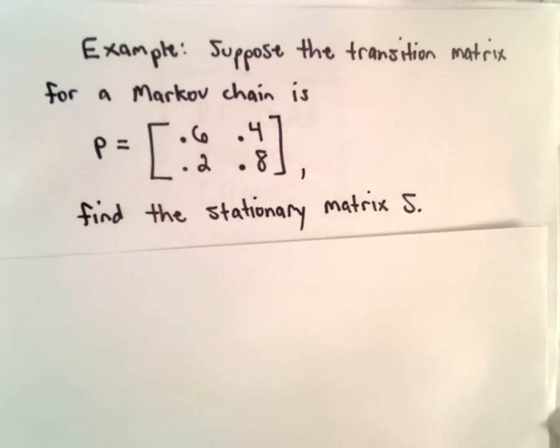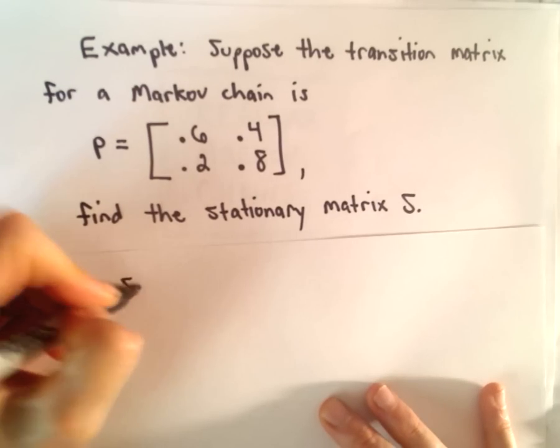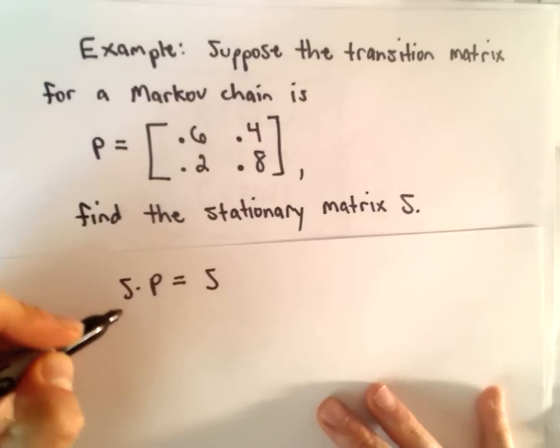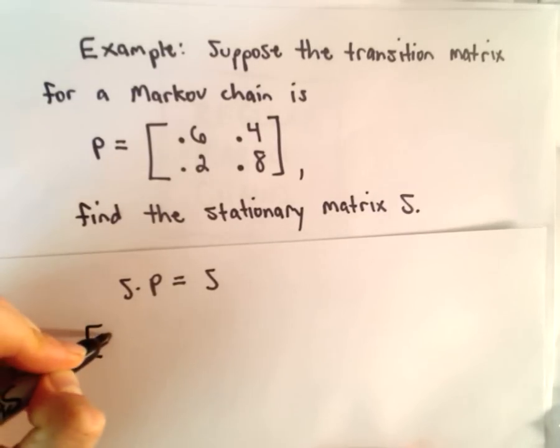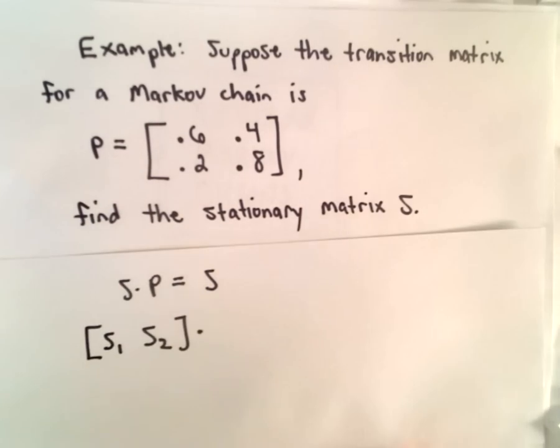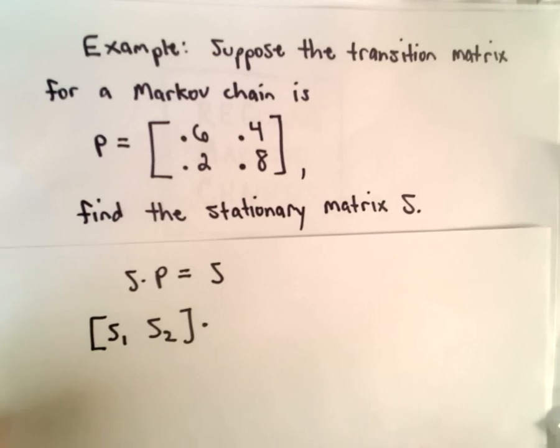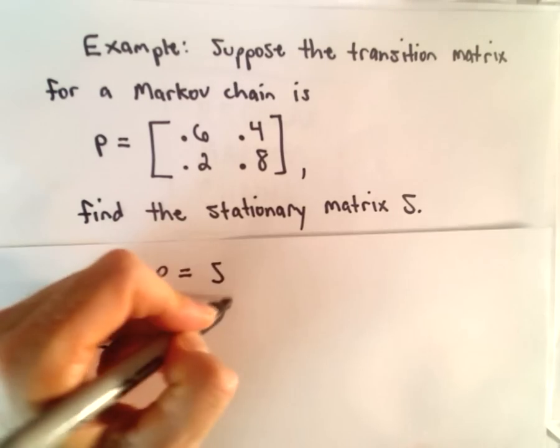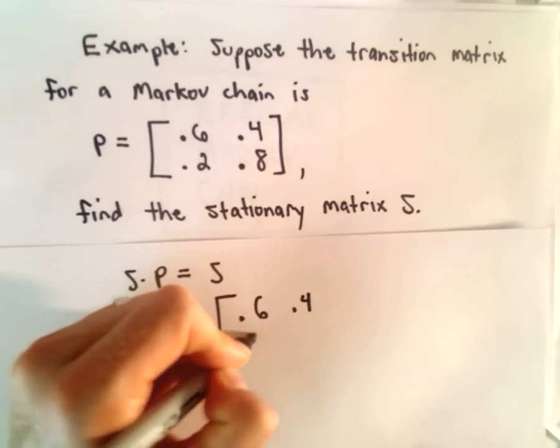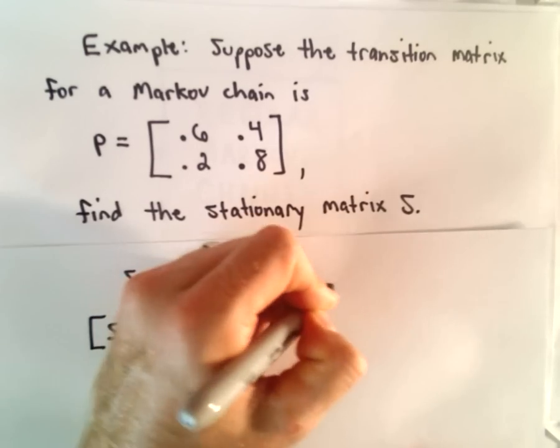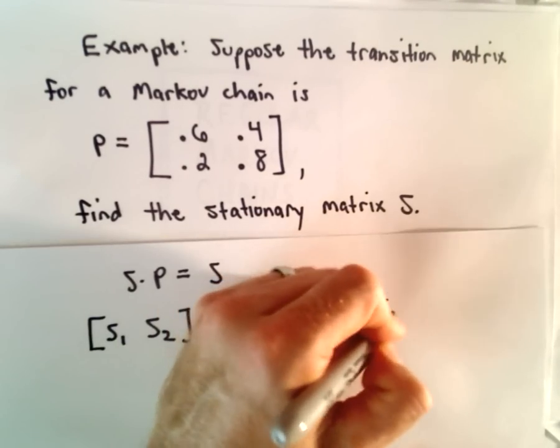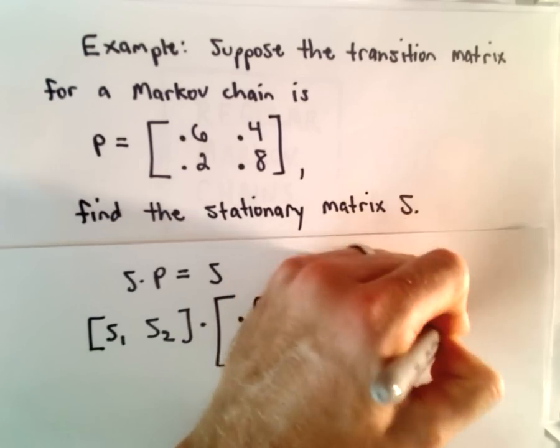All we have to do is solve the equation S times P equals S. Let's suppose that our stationary matrix S has entries S₁ and S₂. If we multiply that by P - so 0.6, 0.4, 0.2, 0.8 - we're going to get our stationary matrix S₁ and S₂ right back.